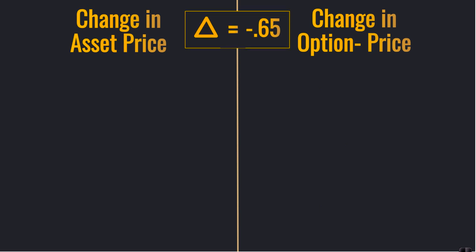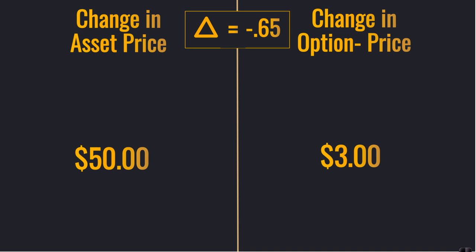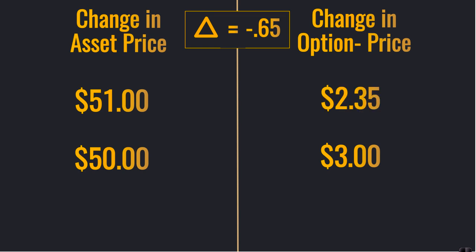Now if we were to flip that around and look at a put option with a negative Delta — again, we had an asset at $50 and an option premium of $3 — if the asset price rose $1 and we had a put option with a negative Delta of negative 0.65, then that put option premium would drop to $2.35.